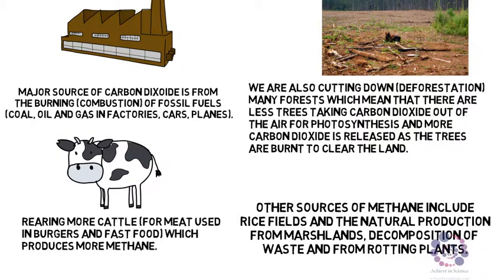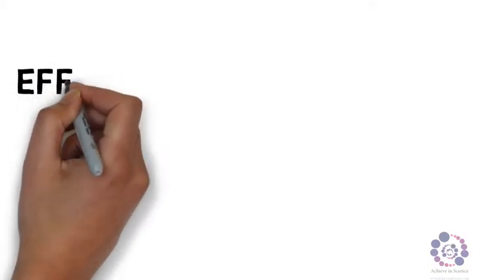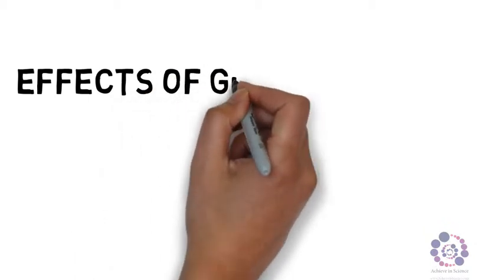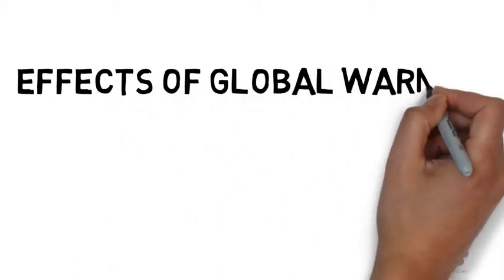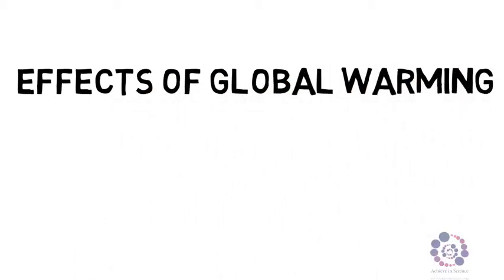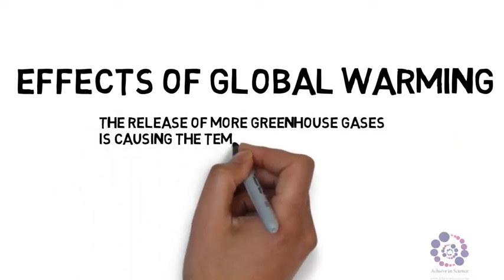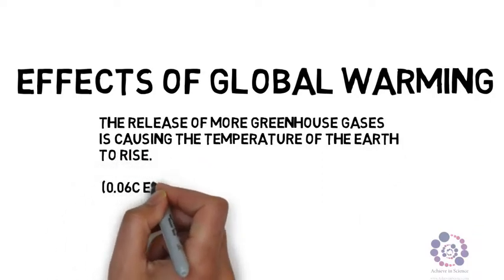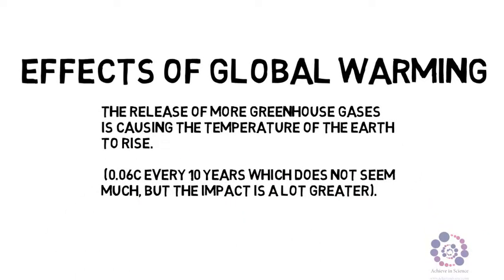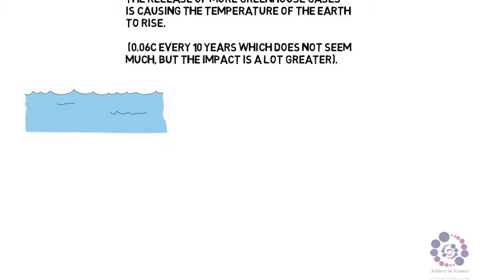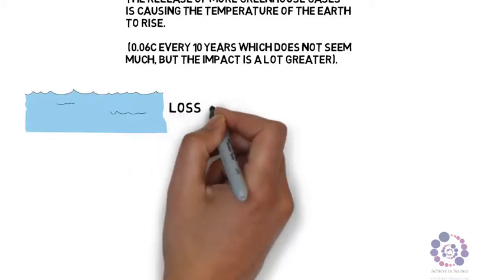Finally, let's have a look at some of the issues. What are some of the effects of global warming? Well, the release of more greenhouse gases is causing the temperature of the earth to rise. It's rising at a rate of about 0.06 degrees every 10 years, which doesn't seem much, but the impact is a lot greater.